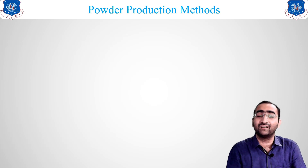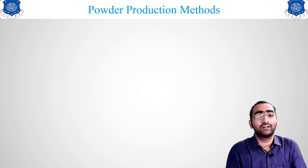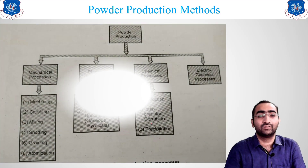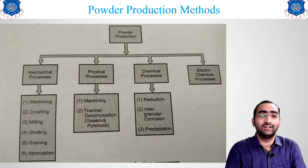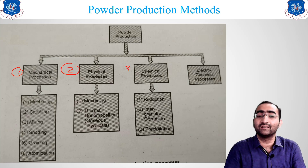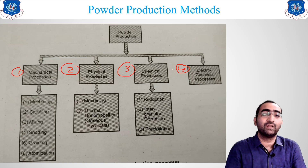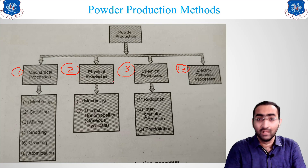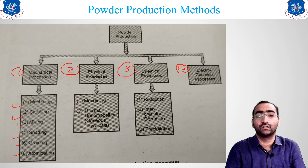Now let us start with the first step: powder production methods. Powder production methods are divided into four primary categories. The first is mechanical processes, which are the most widely used. The second is physical processes. The third is chemical processes. The fourth is electrochemical processes. Under mechanical processes, there are six methods: machining, crushing, milling, shooting, graining, and atomization.